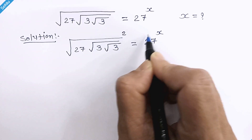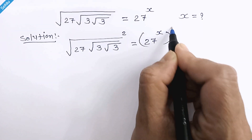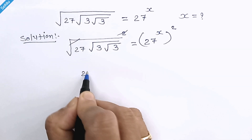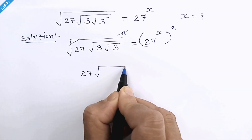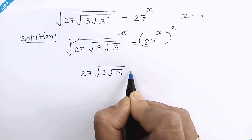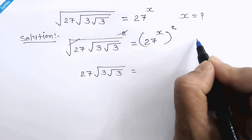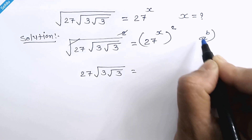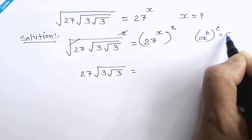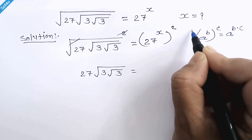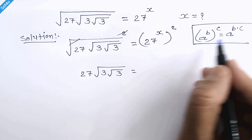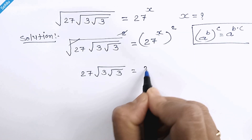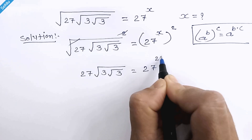In the first step we will square both sides, so this square and square root get cancelled out. Now let's recall a rule where a raised to b, whole raised to c, can be written as a raised to b times c. So in this manner we can multiply these two, and it will be 27 raised to 2x.